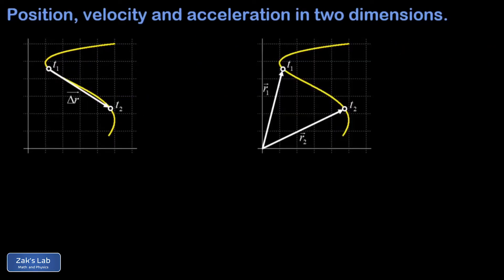Now that we have displacement, we define average velocity in two-dimensional space. The definition is the same as in one dimension — it's the displacement during some time interval divided by how long it takes. The average velocity is a vector that points in exactly the same direction as the displacement vector, because delta t is just a scalar — it can change the length of delta r, but it cannot change the direction.